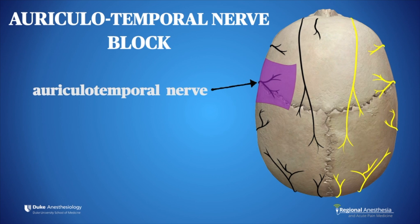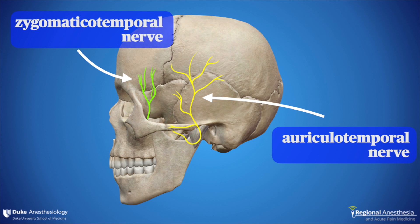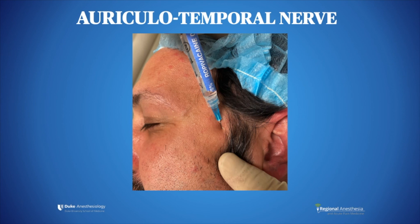Here we see the auriculotemporal nerve. The sensory distribution of this nerve can be seen depicted in the purple box. The auriculotemporal nerve can be blocked by injecting local anesthetic solution above the posterior portion of the zygoma, anterior to the ear and behind the superficial temporal artery. A 27 gauge needle is inserted anterior to the superior tragus. Exercise caution given the vicinity of the temporal artery, which you should palpate.